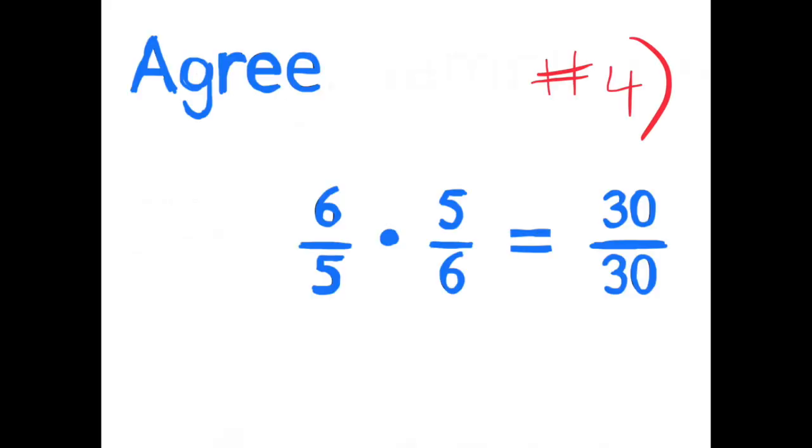Number 4. Diego said that the answer to the question, how many groups of 5/6 are in 1, is 6/5 or 1 and 1/5. Do you agree with his statement? Explain or show your reasoning. Diego said that there are 6/5 groups of 5/6 in 1, so 6/5 times 5/6 equals 30/30, which is equal to 1. So I agree with Diego.